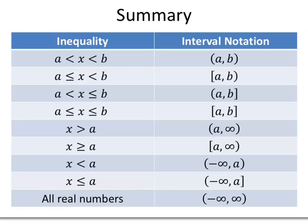To summarize, we've got 9 different kinds of intervals. There are 4 kinds where we have numbers between 2 given numbers, depending on whether we use strict less than or less than or equal to signs. There are also 4 kinds where we have only 1 given number — all numbers bigger than, bigger than or equal to, less than, or less than or equal to a given number. And then finally, we have the set of all real numbers.